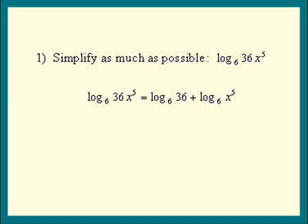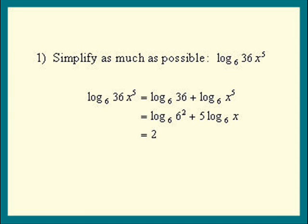Look at the first term. 36 is 6 squared, and notice that's the base of our log, so let's write 36 as 6 squared. In the second term, we can use the power rule to pull the 5 out in front of the log. Log base 6 undoes the base 6 to a power, leaving the number 2. So 2 plus 5 log base 6 of x is our final answer.